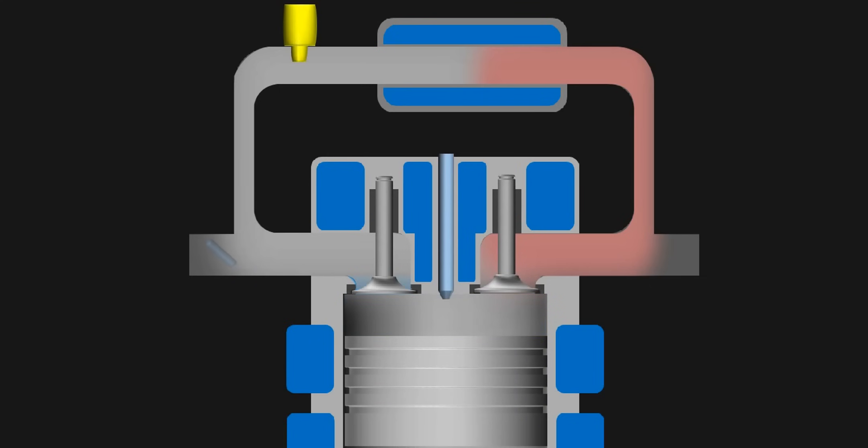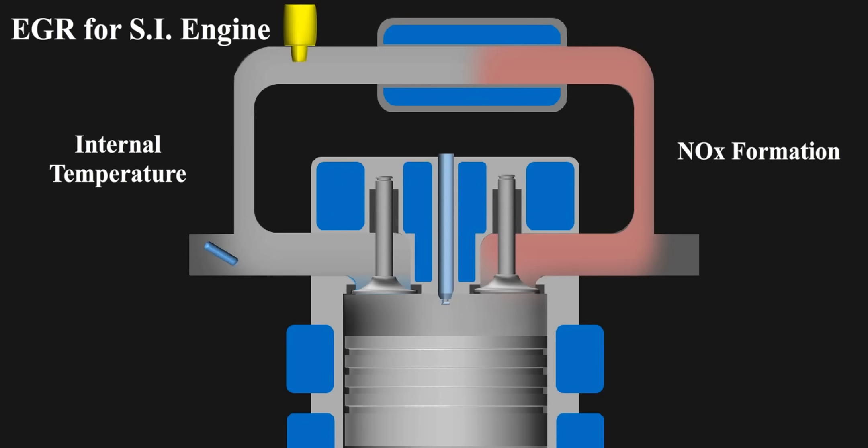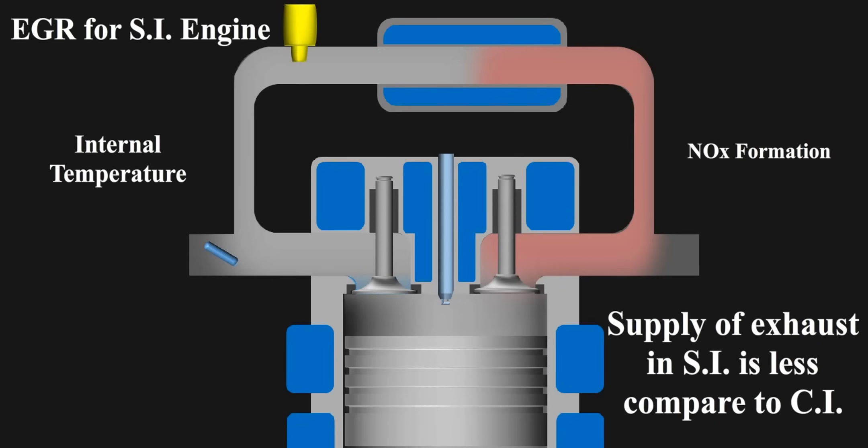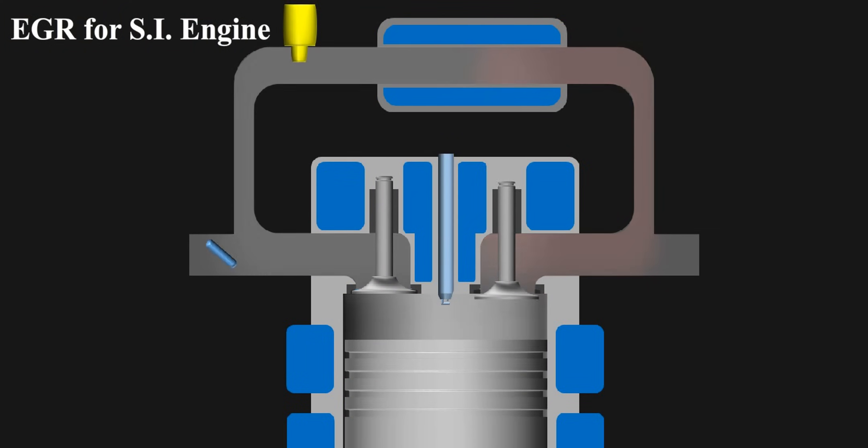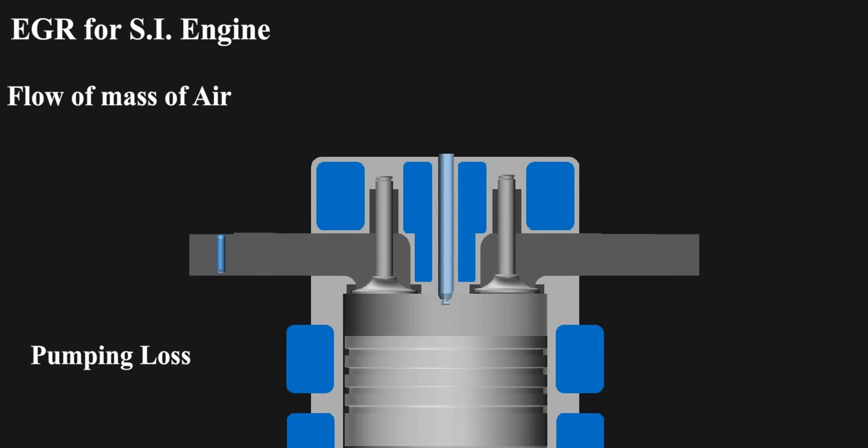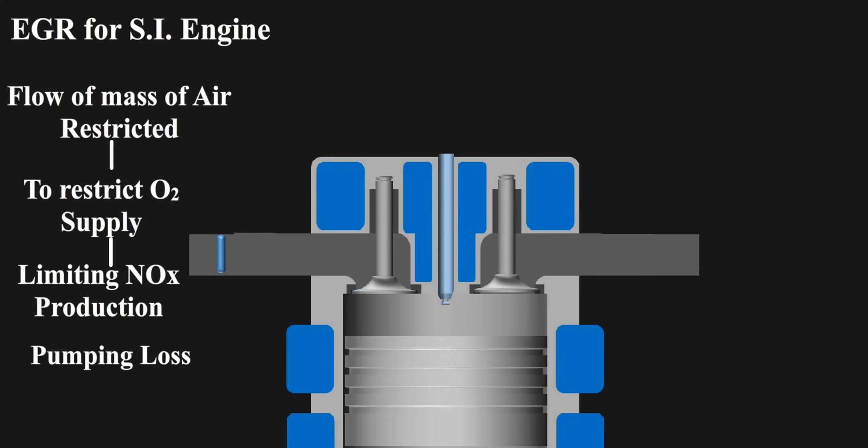This is for CI engines. For SI engines, the reason to recirculate it is to decrease the internal temperature and NOx formation. Its supply in SI engines is less compared to CIs. As more mass introduction at inlet may lead to auto ignition, which is not desired in SIs, as it may lead to knocking. In SI engines, apart from cooling, there is one more advantage. That is, reduction in pumping losses. In SI engine, the flow of mass of air is restricted to restrict the oxygen supply, hence limiting the NOx production directly. This reduction in air flow also helps in decreasing the knocking tendency.